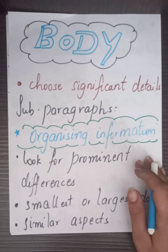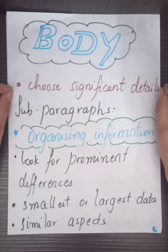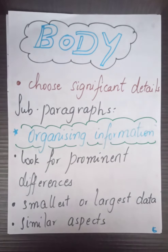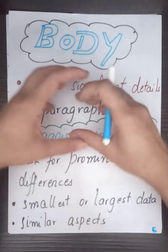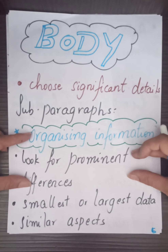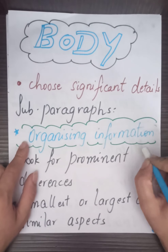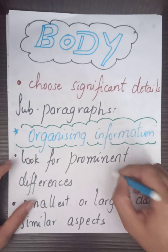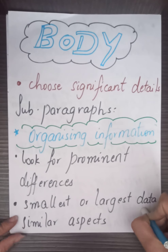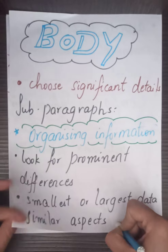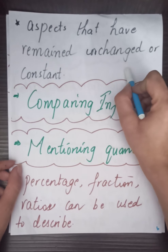Next comes the body of the analytical paragraph. The first and foremost thing is to choose significant details — do not include everything in your paragraph. You can even divide the body into sub-paragraphs. When organizing your information, look for prominent differences, the smallest or the largest data, similar aspects, and aspects that have remained unchanged or constant.